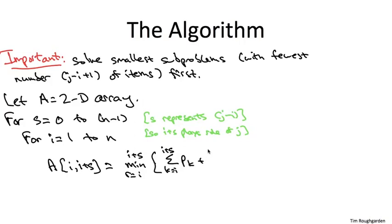And then we also look at the previously computed optimal solution values for the two relevant subproblems. One starting at I, ending at R minus one. The other starting at R plus one and ending at I plus S.